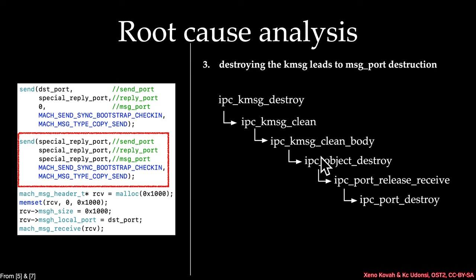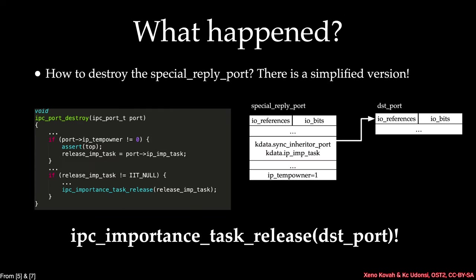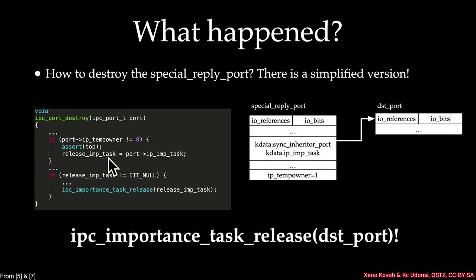IPC_kmsg_destroy goes down a long path and eventually reaches IPC_port_destroy. Inside IPC_port_destroy, if IP_temp_owner is not equal to zero — which we saw was set earlier — it pulls out ip_imp_task. ip_imp_task is one of those defines that actually pulls something from the k_data field of the port, the special reply port here. But because this is a special reply port, that field is actually holding a sync_inheritor port link pointing at a destination port. So the destruction code assumes that because this is set, this field must be an IP importance task.